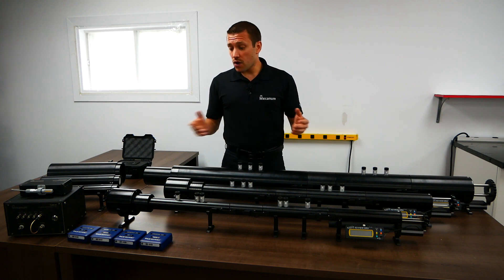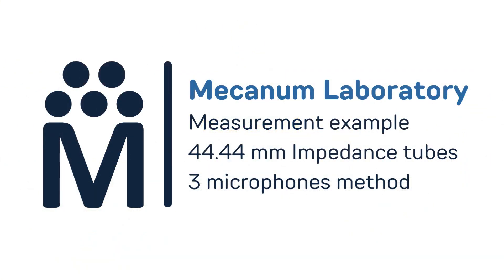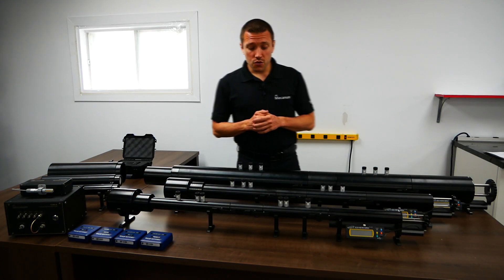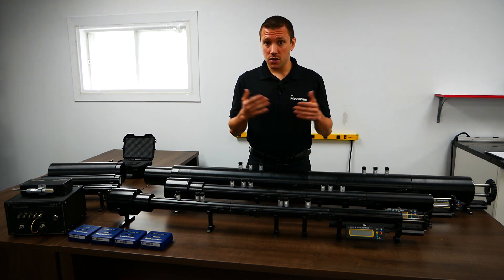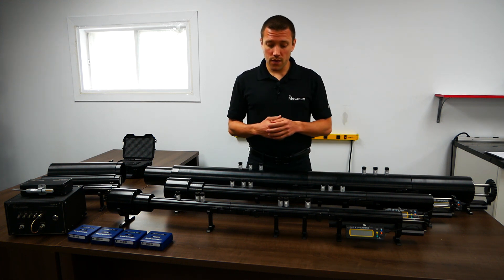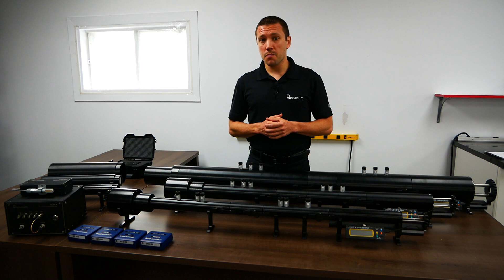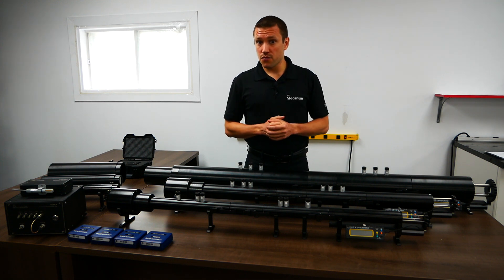Now that you have a good idea of our test setup, let's make an example. Today we are going to perform a three-microphone method transmission loss measurement with the 44 millimeter impedance tube, and we are going to measure a PU foam.